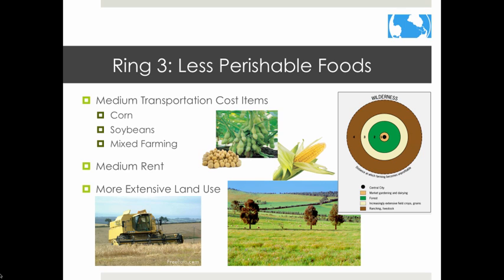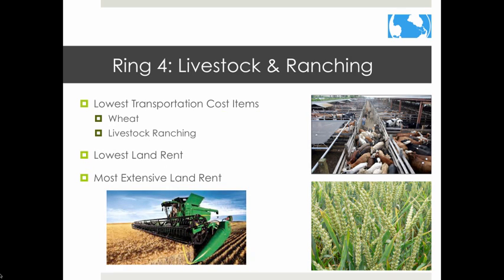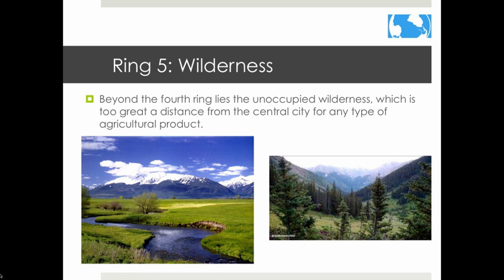Ranching is located in the fourth ring surrounding the central city. Animals could be raised far from the city because in Von Thünen's time they would transport themselves to market — animals can walk to the central city for sale or butchering. This type of farming requires the most land, so it needs to locate where land is cheaper. Beyond the fourth ring lies unoccupied wilderness — too great a distance from the central city for any agricultural activity to turn a profit.